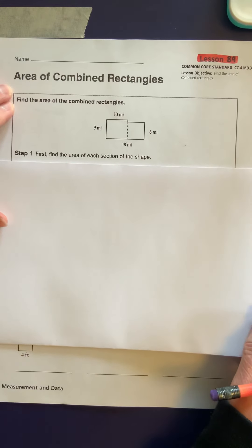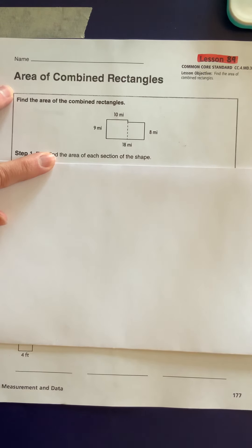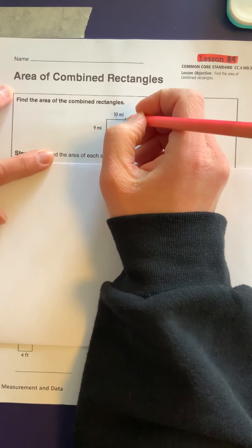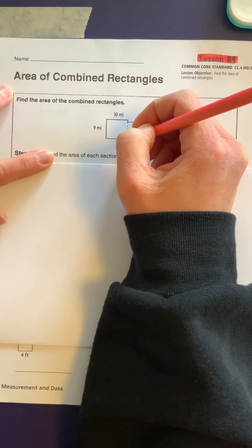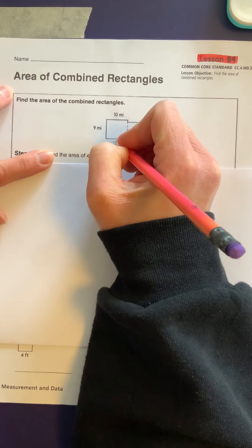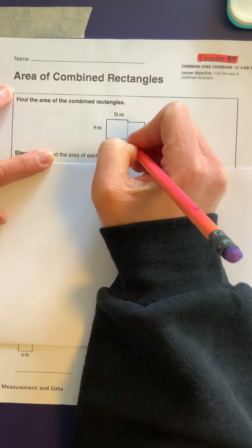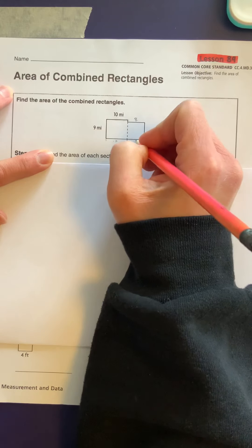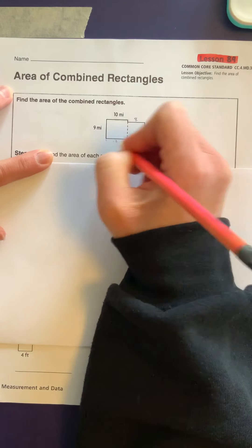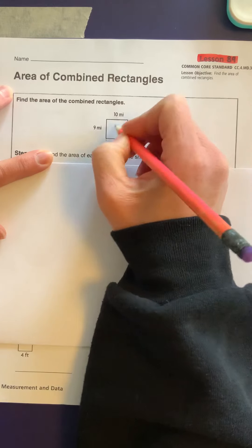Find the area of each section of the shape. So we know from here to here is 10. So that means from here to here is 10, which means of the 18 that are left from here to here is 8. So that total this is 18 from here to here.